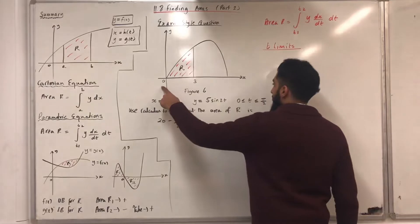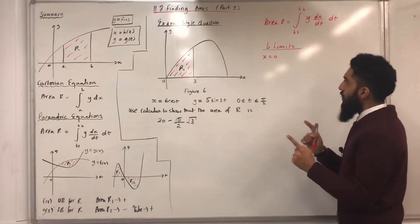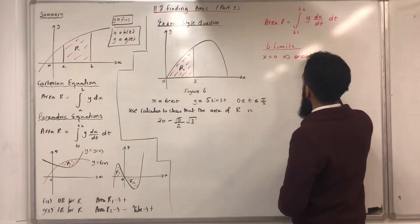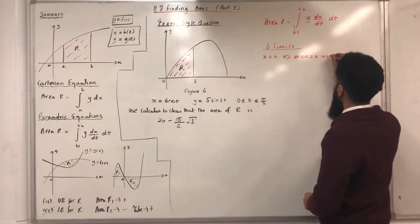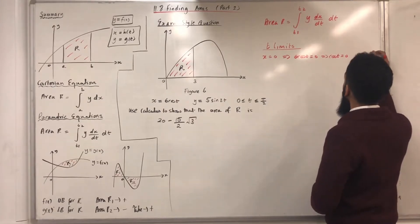The first x limit is x equals 0. When x is equal to 0, this implies that 6 cos t is equal to 0, which implies that cos t is equal to 0. Therefore, t is equal pi over 2.